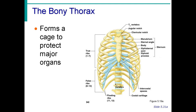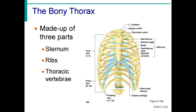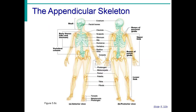The ribcage or thoracic cage has 25 bones. It forms a partially flexible, protective shield for the heart, lungs, and other thoracic organs. The thoracic cage also helps protect some organs of the upper abdomen, such as the liver and spleen. The appendicular skeleton is divided into three parts: the limbs, the pectoral girdle, and the pelvic girdle.